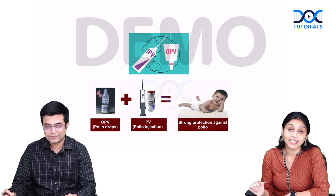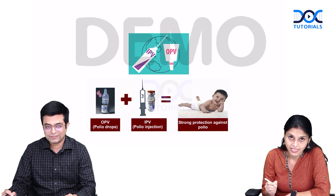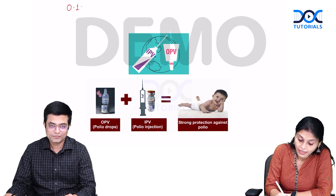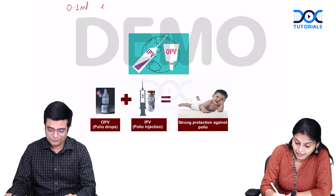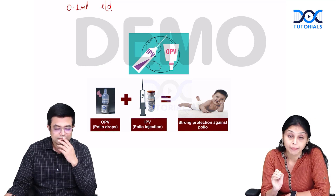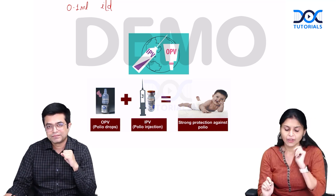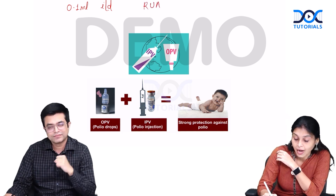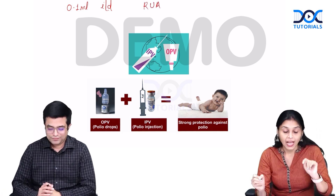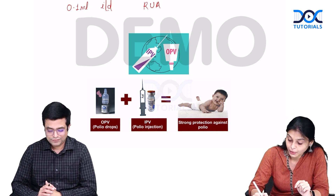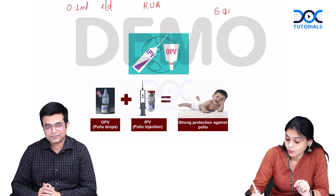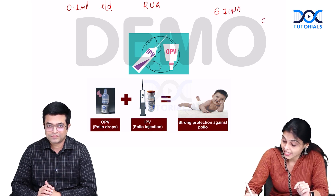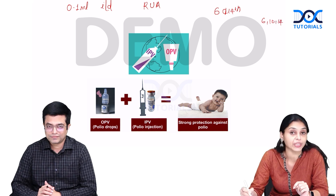What is IPV? It is inactivated polio vaccine. The dose is 0.1 ml, given intradermally on the right upper arm. These are very commonly tested MCQ points. The schedule is: IPV is given on the 6th and 14th week, along with OPV which is given on the 6th, 10th, and 14th week.